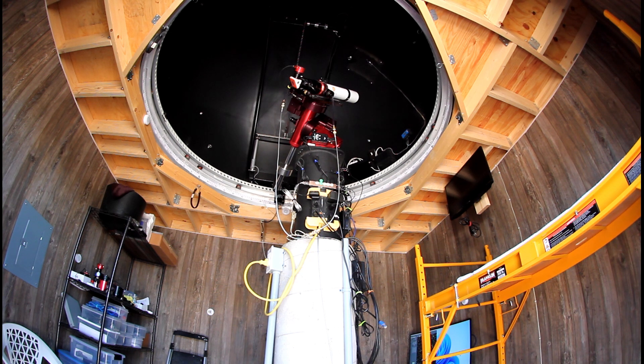The knobs on a Lunt solar telescope provide an effective means of tuning the etalons. However, in my case, the telescope is on a pier 10 feet off the ground, requiring me to stand on a stepladder while turning the knobs and trying to get the etalons in tune.